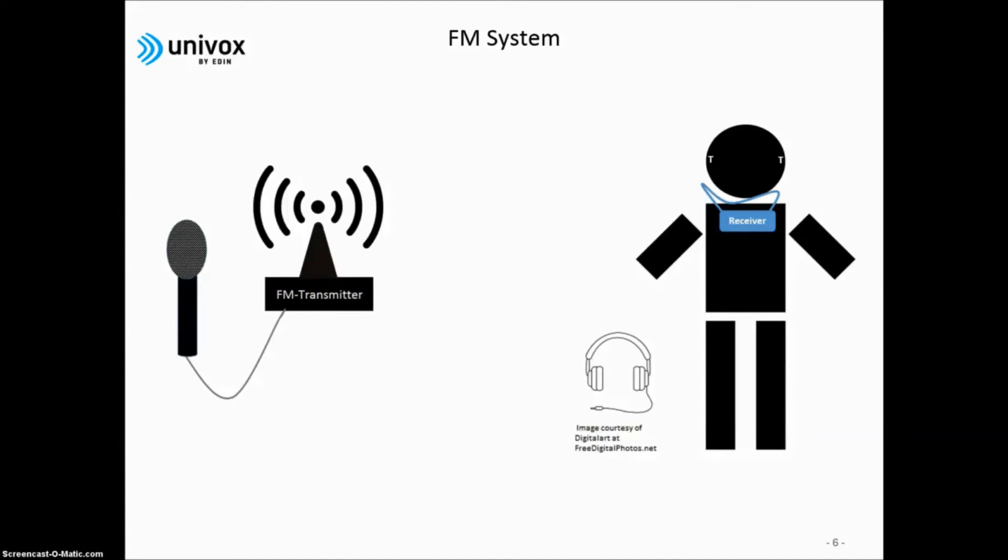An FM system works like a normal guide system, apart from the components often are and should be adapted for hard of hearing persons. A signal source, like a microphone or mixer, is connected to an FM transmitter. The listener receives through an FM receiver. Both regular headsets and receivers with induction neck loops can be used.